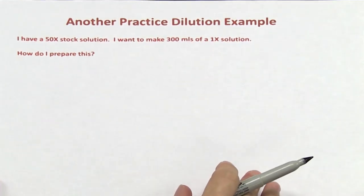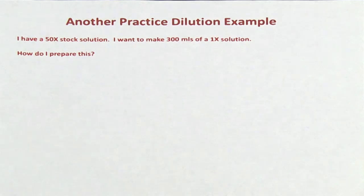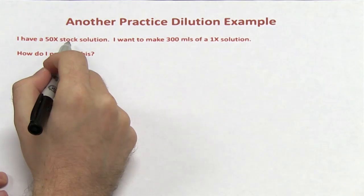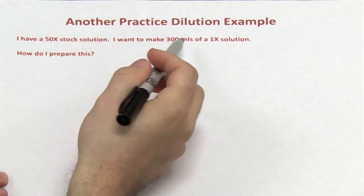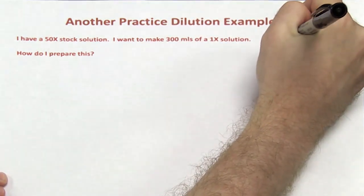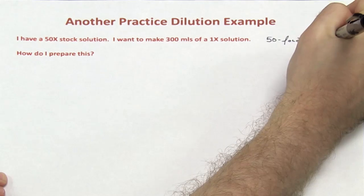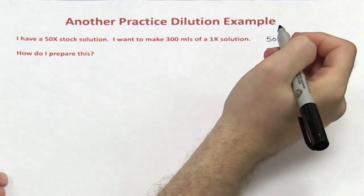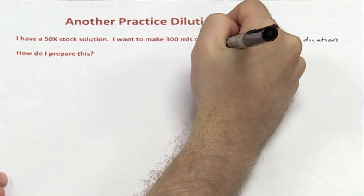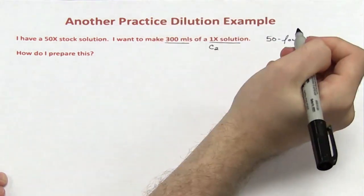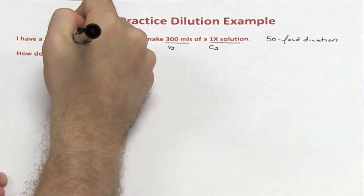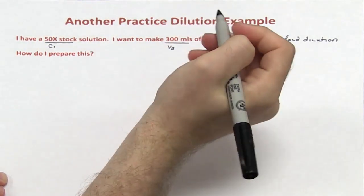Let's look at another example using C1V1 = C2V2. I have a 50x stock solution and I want to make 300 mL of a 1x solution — a 50-fold dilution, taking the 50x down to 1x. The 1x solution is my final concentration, C2, and I want 300 mL of it, so that's V2. The 50x stock is my initial concentration, C1.